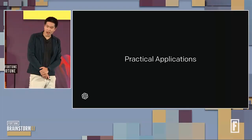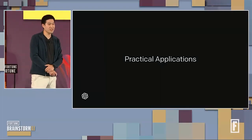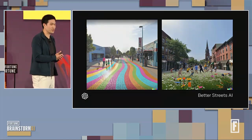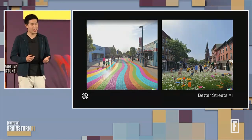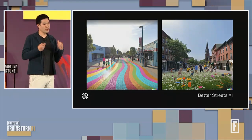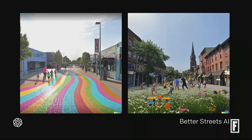I want to talk about a couple of practical applications of DALL-E. When we launched DALL-E, one interesting class of users who came to us were urban planners. In particular, the organization Better Streets AI was focused on how to show people what streets could look like if designed around pedestrian experiences rather than vehicles. You can see they've taken city streets and rendered pedestrian and walkable spaces — illustrating the power of showing people, not just telling people.